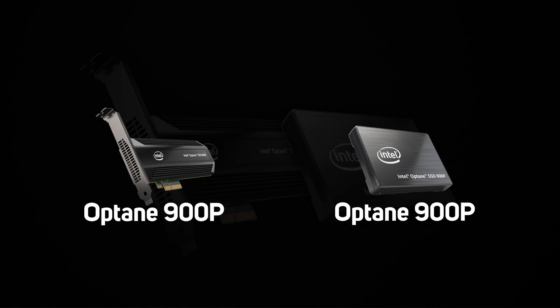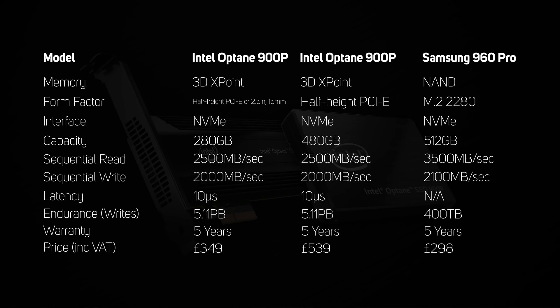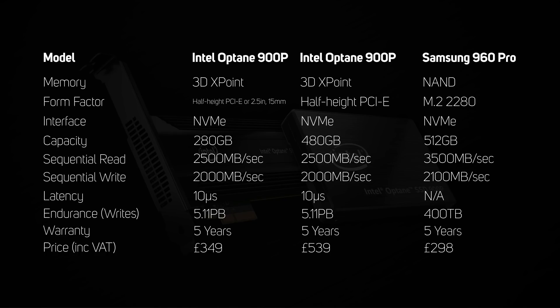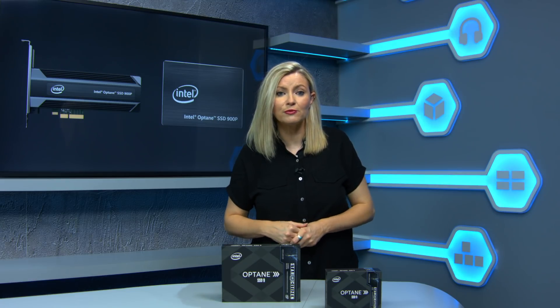The initial line-up comprises three models: two half-height full-length PCIe cards and a 2.5-inch U.2 drive. This table highlights the key specs of the new Intel Optane 900p SSDs versus the Samsung 960 Pro, the most popular high-end NAND SSD on the market at the moment. The specs reveal some intriguing differences between the Optane 900p and the 960 Pro. To start with, the 960 Pro has a significantly faster sequential transfer rate, although you need to be careful comparing numbers from different manufacturers, as they don't always specify the conditions under which performance was measured.